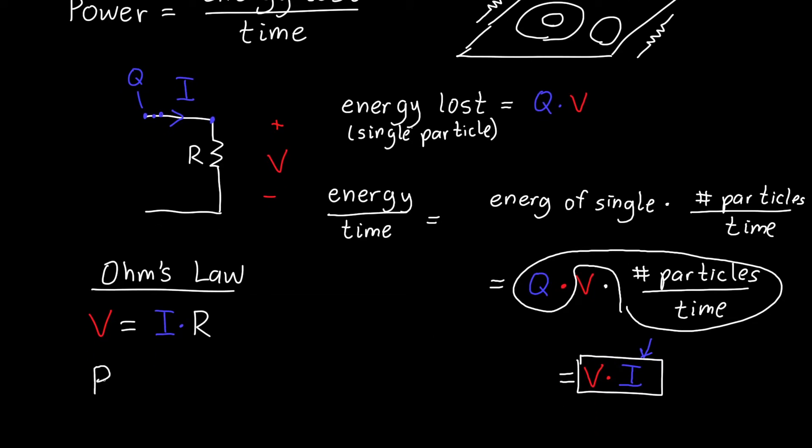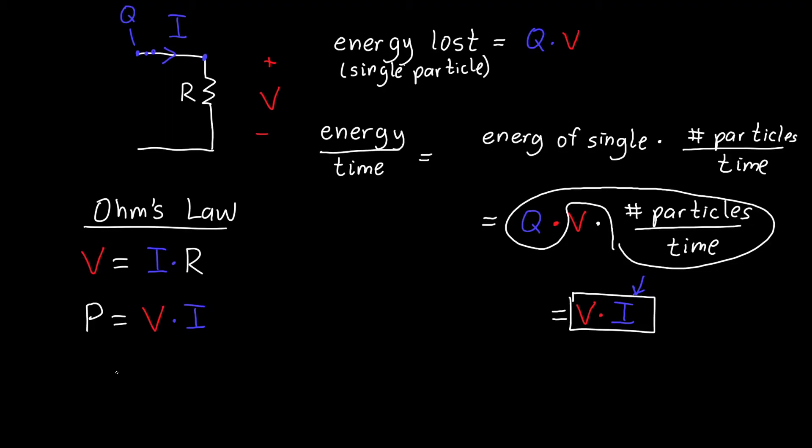And so if we plug in, so power is equal to the voltage times the current, if we plug in, say that we know the current, we can plug in the value for V, and we get that the power is equal to I squared times the resistance. Or suppose that we can rearrange this to solve for the current, and the power is equal to the voltage squared divided by the resistance. And so both of these expressions will work to find the power. It's just that sometimes you know the current, sometimes you know the voltage, and so sometimes one might be more useful than the other.